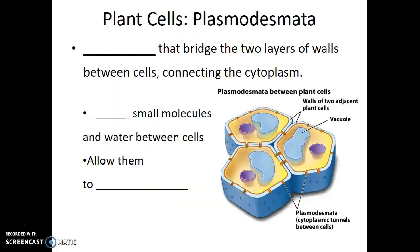For plant cells, there is only one type of cell junction. These are known as plasmodesmata. These are channels that bridge the two layers of cell walls between the cells along with their plasma membranes, connecting the cytoplasm of two neighboring cells. This allows plant cells to pass small molecules and water between the cells, essentially allowing those plant cells to communicate.